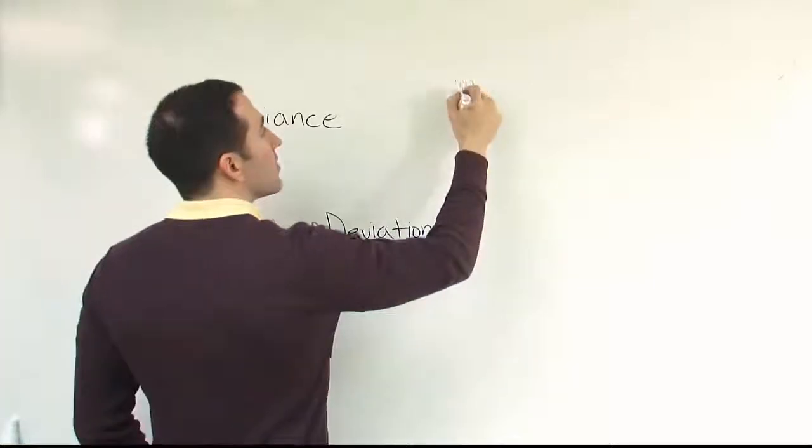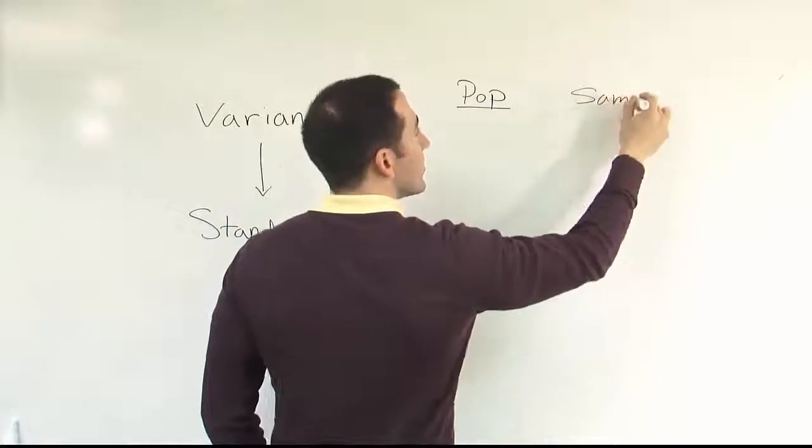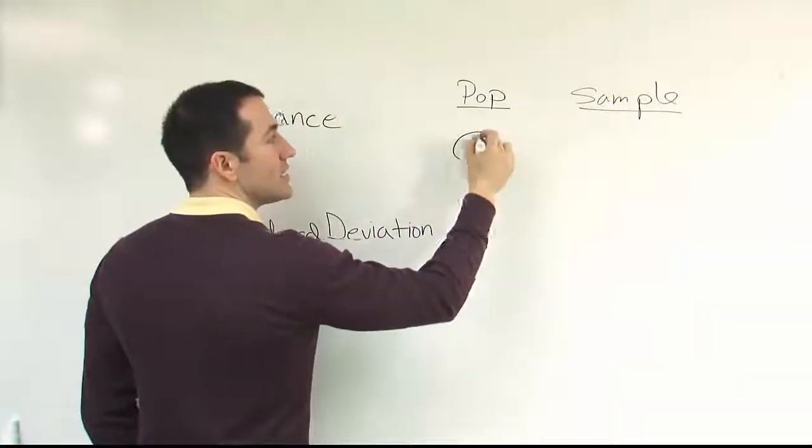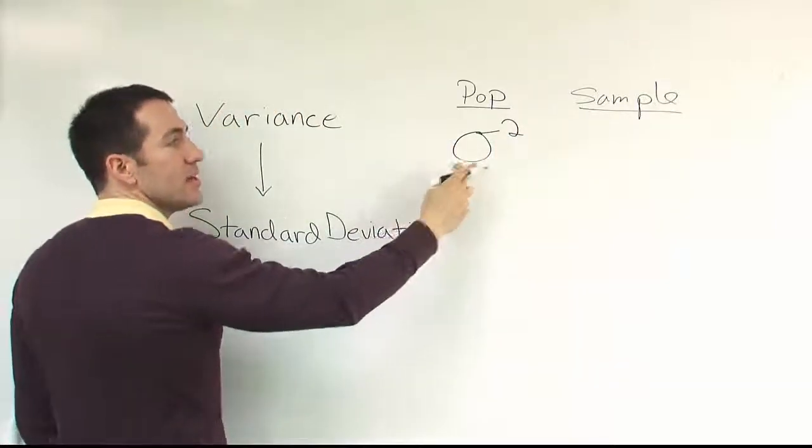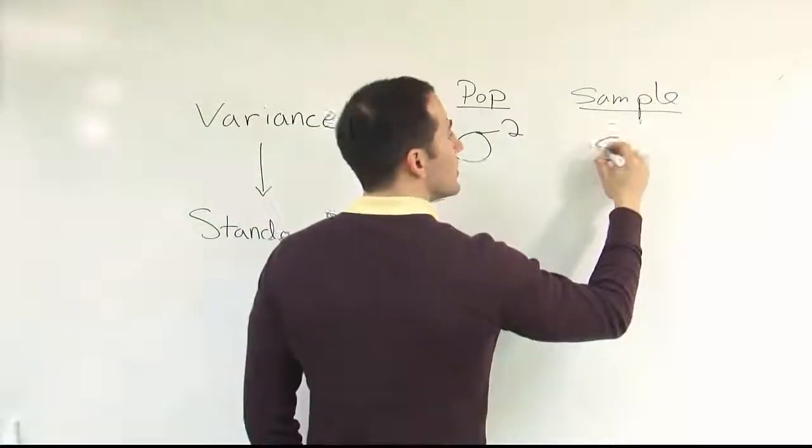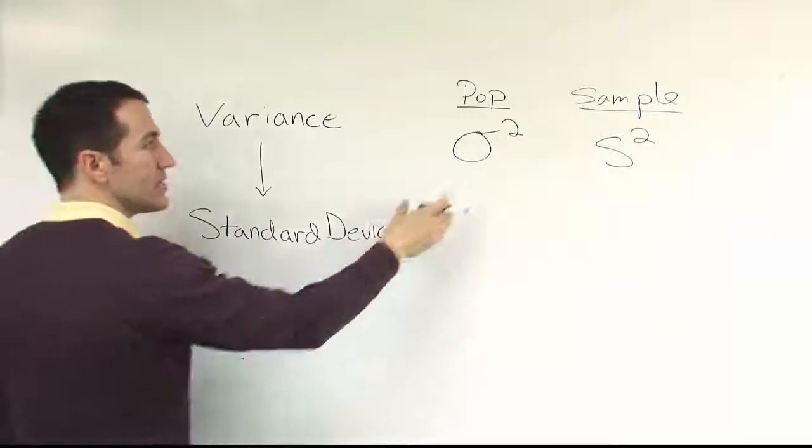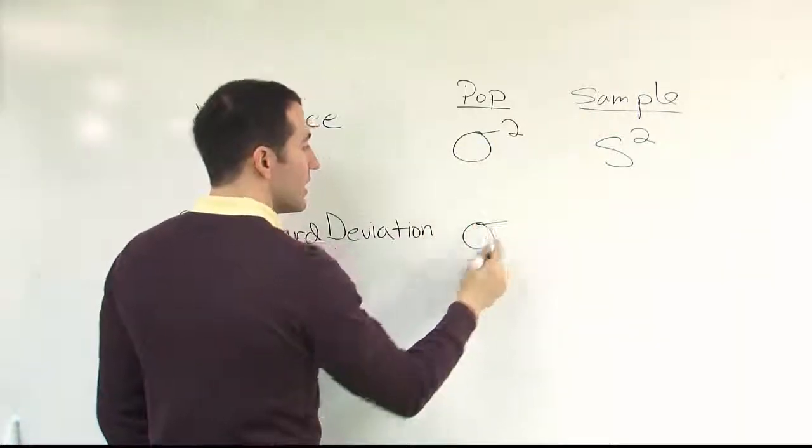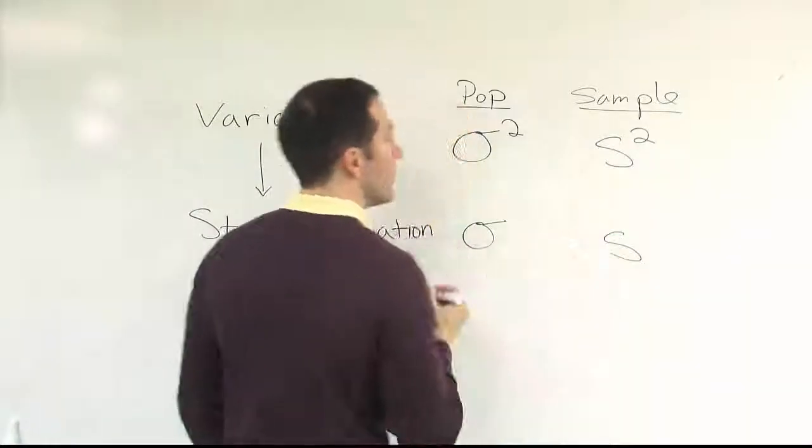The variance, if you look at the population symbol, and then the sample symbol for the variance, the population symbol for variance is sigma squared. That's sigma, the Greek lowercase letter sigma, and we square it. So that's the symbol for variance. For sample variance, we're going to use s squared. For standard deviation, since these two are related just by a square root, we end up having standard deviation being the symbol sigma, and then s for the sample version of that.